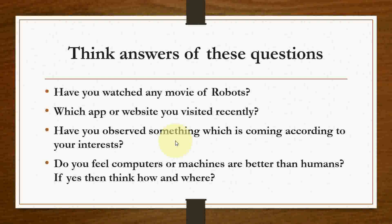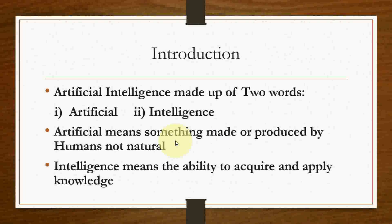Moving to the introduction slide: when we think about artificial intelligence, it is not a new term. This field is very old — the idea started about four decades ago, and many companies and organizations outside India are using AI-related machines and systems. The word 'artificial intelligence' contains two sub-words: 'artificial' means something made or produced by humans, not natural.